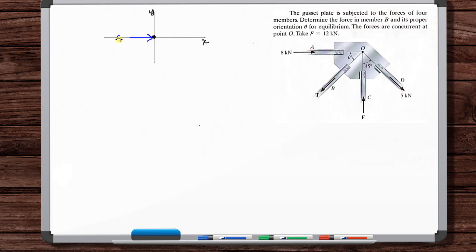We have eight kilonewtons acting here. We've got a vertical force F. Okay, we've got this force T occurring at unknown angle theta. And then we've got five kilonewtons at 45 degrees. Okay, so that is our free body diagram.